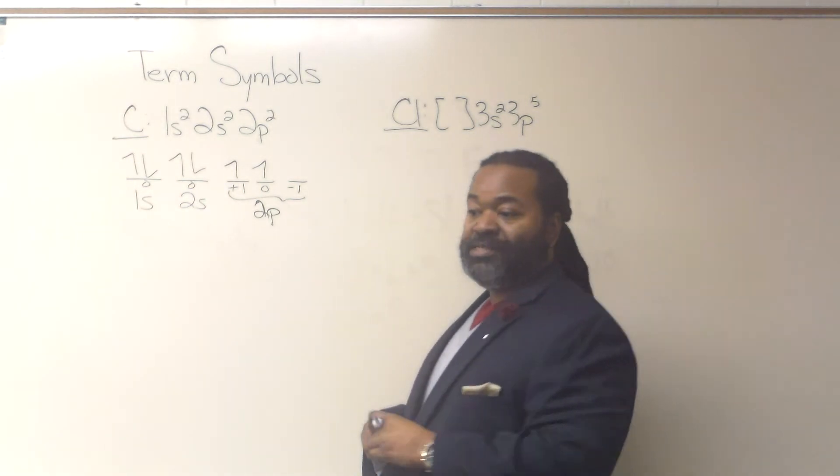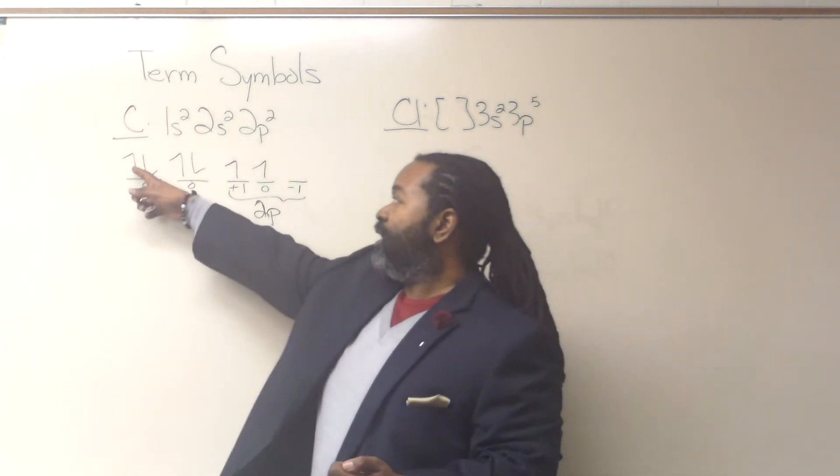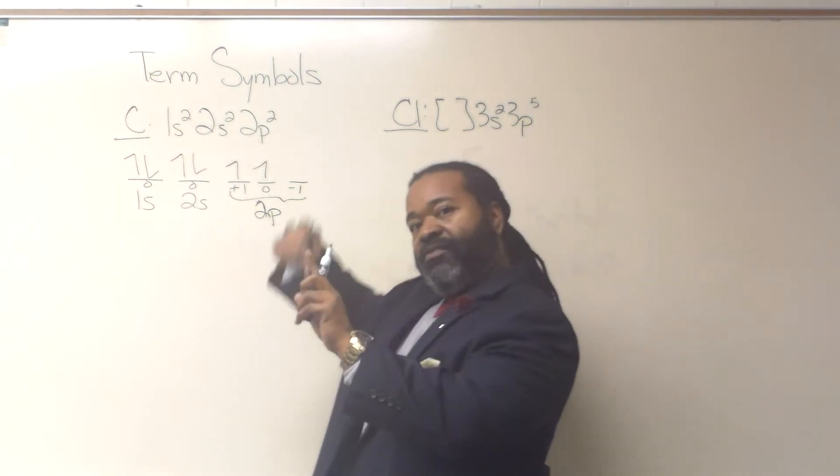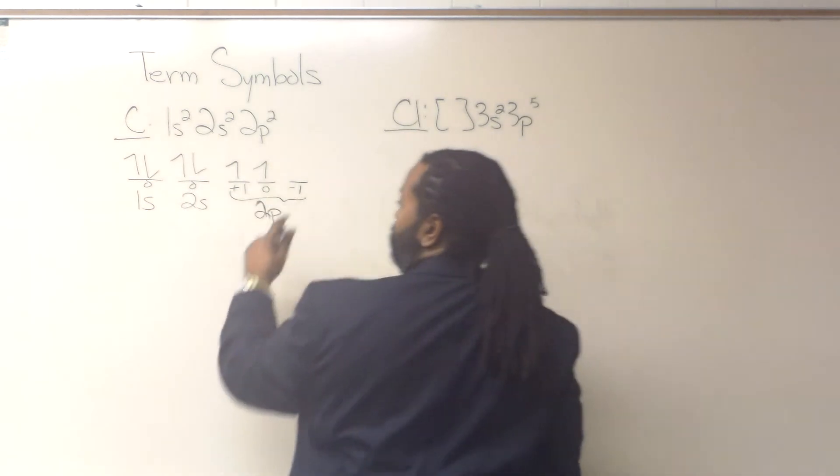So now to find s, we're just going to add up all of our spins. Bear in mind that because these are paired, the plus 1 half and minus 1 half will actually cancel each other, so we really can just skip to the unpaired ones.